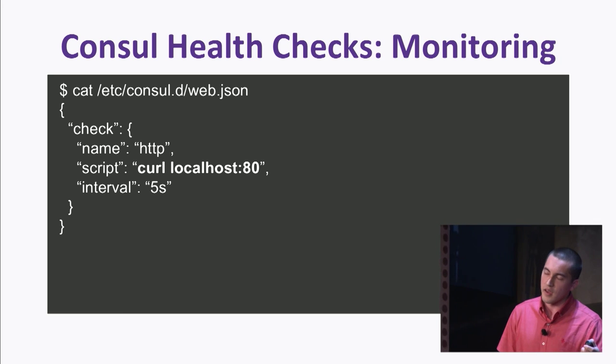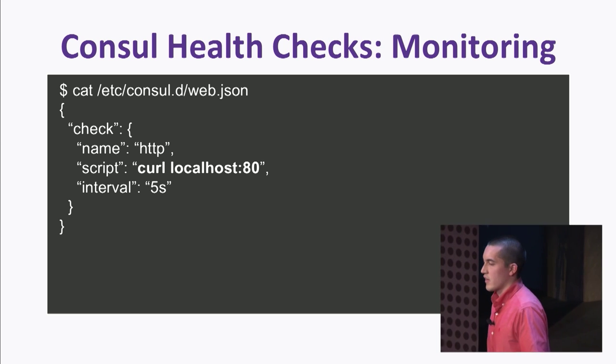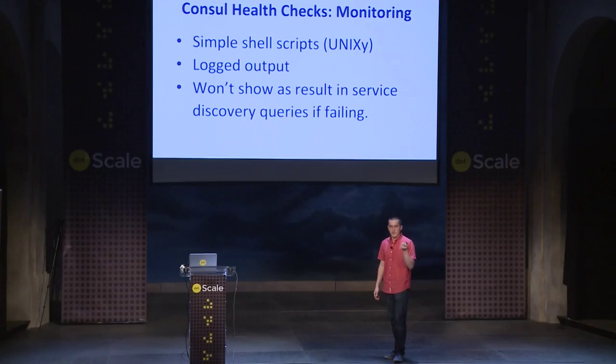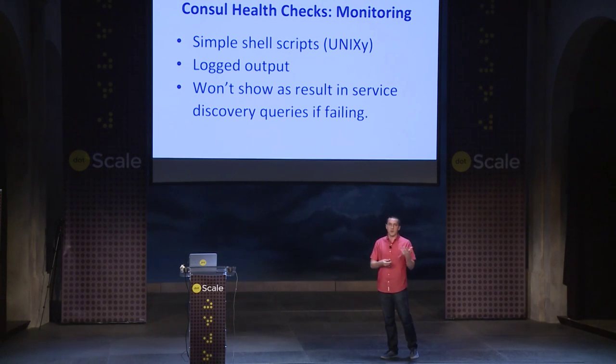Finally, for health checks — knowing what's failing and what's not — you use Consul health checks, which are really simple. They're just basic Unix scripts that return 1 if failed and 0 if succeeding. They're Nagios-compatible, so you can use Nagios plugins. In this case we're just using curl to test the web service every five seconds. You can see the results in the Consul web UI — not only the green passing banner but also the output of the latest state change, so you can see exactly how things are failing.